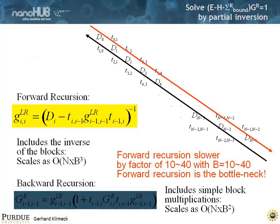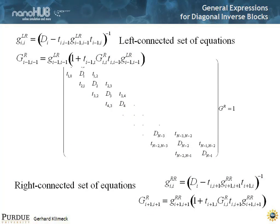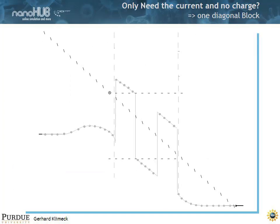It's a little bit slower by a factor of 10 to 40 if your block size is 10 to 40. These are the general expressions to get diagonal matrix elements of the inverse. If you ever only wanted to know what the true inverses of a block tridiagonal matrix are, this is the fastest method known right now to get these inverses. If we only need the current, we need this one diagonal block — so we march not to the very end, we just march to here and march up from below to this point, and we get that matrix element and can calculate the current.